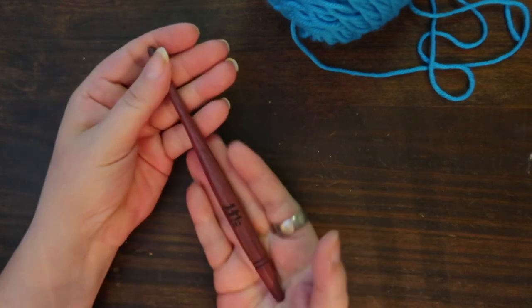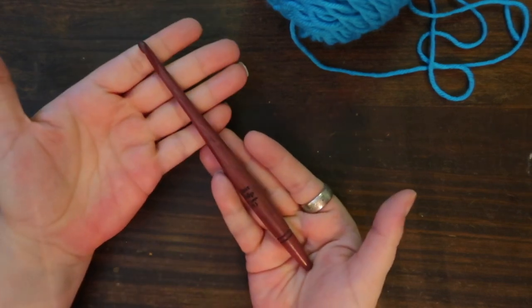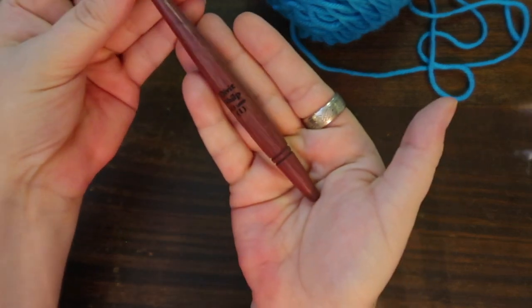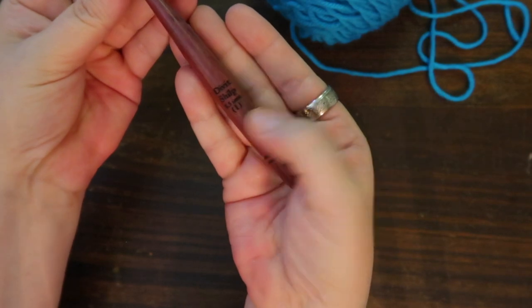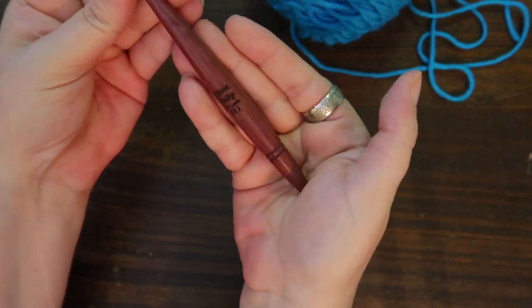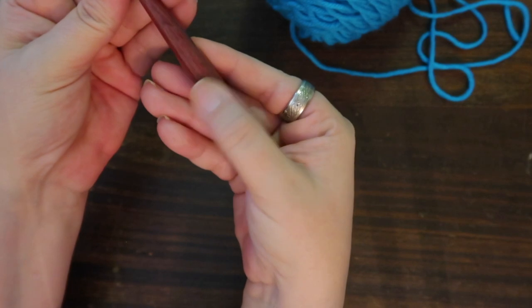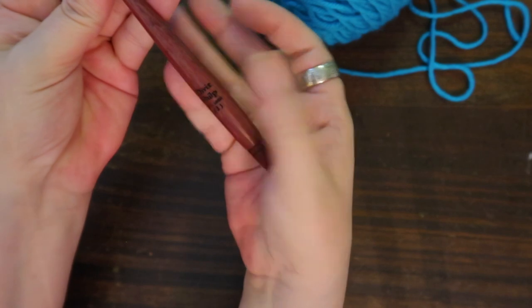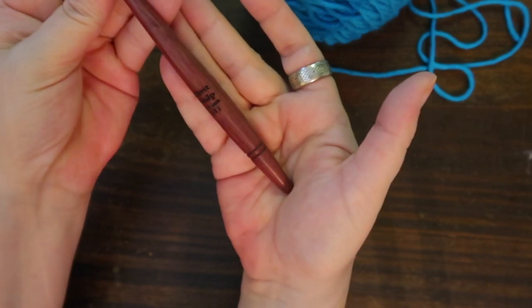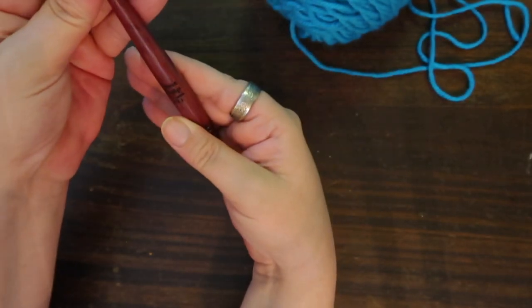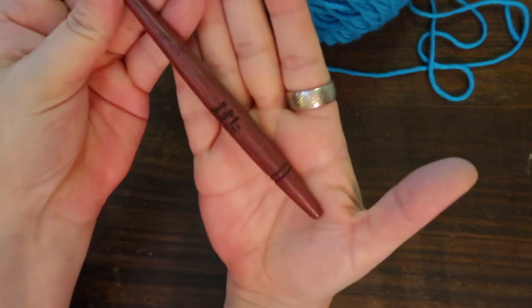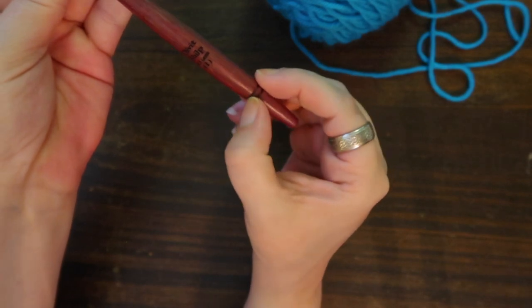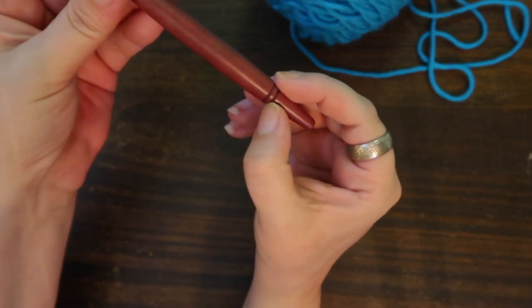Right off the bat, this is a gorgeous hook. It is a beautiful purple hook. It's got it kind of carved into the wood here, the size and the brand of hook, 5.5 millimeter, and it does have the letter size on there. It has these two little notches, little stripes on the bottom here.